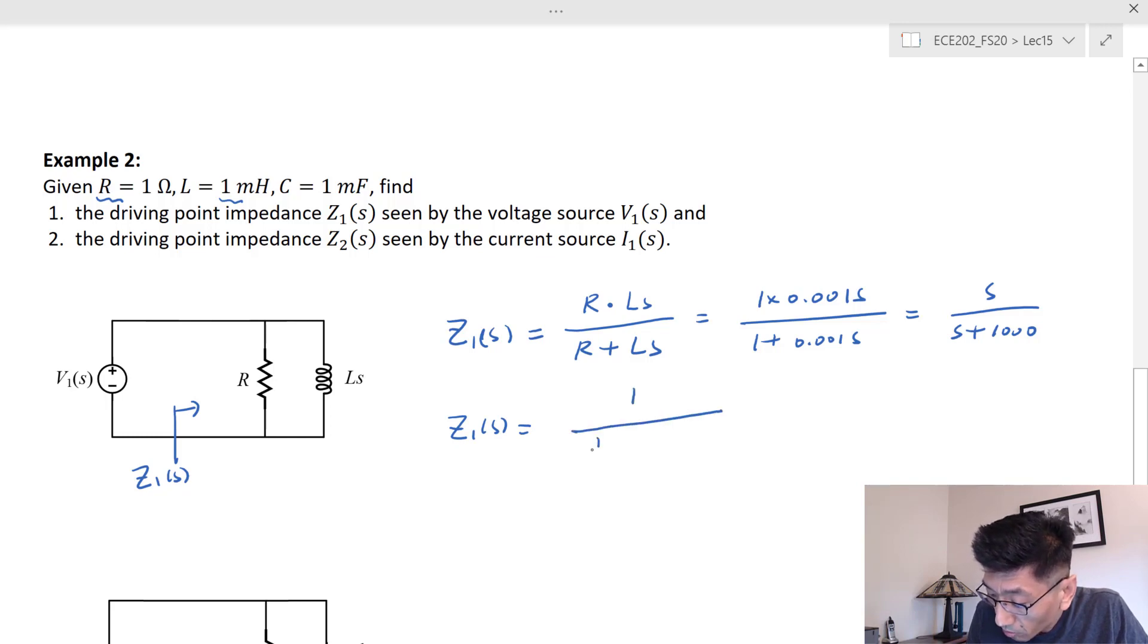You can use 1 over the admittance, so 1 over 1/R plus 1/(Ls), which is 1 over 1 plus 1/(0.001s). In this case, this is one thousand divided by s.